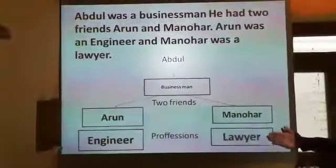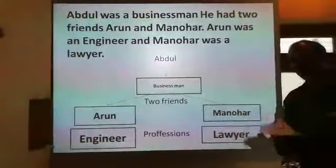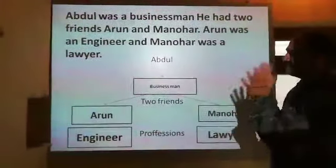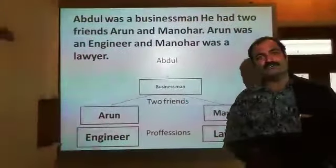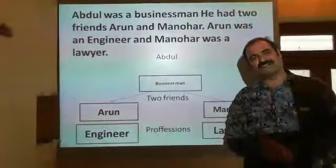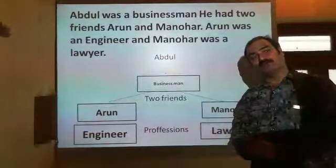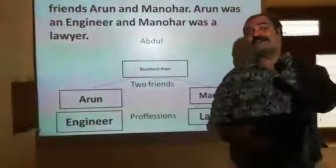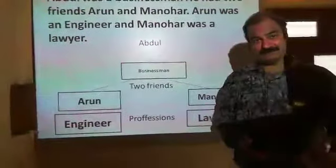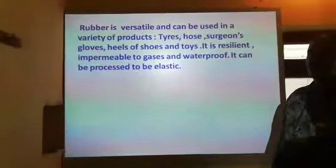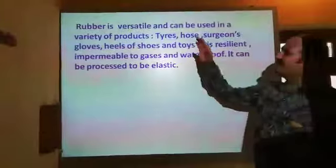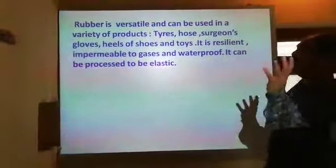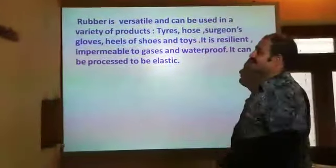It is not that simple, but it is a small example which I have given you to help you better understand. Let us move towards the examples which appear in the question paper. Here we go. We can see: rubber is a versatile material and can be used in a variety of products.